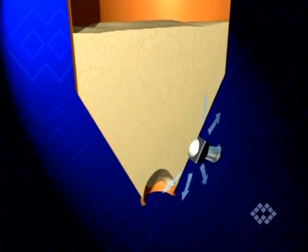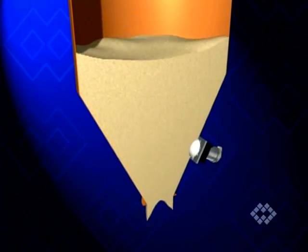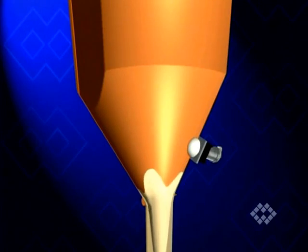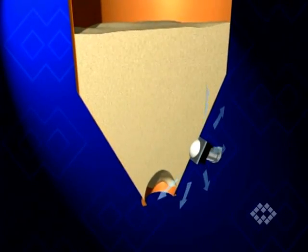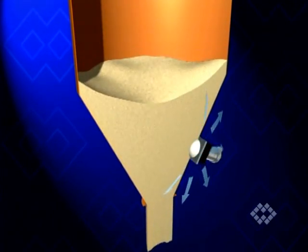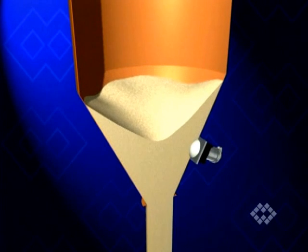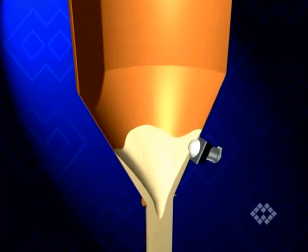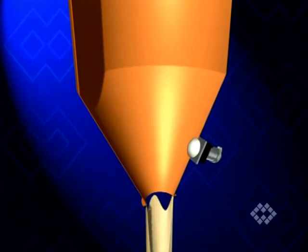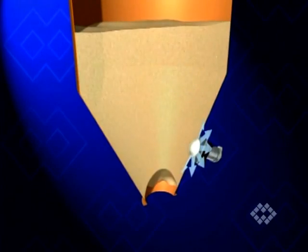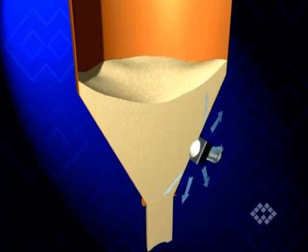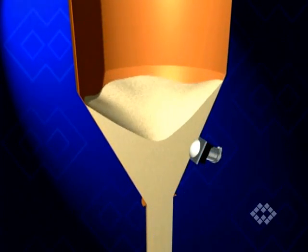The PJ type hammer blast adds to the mechanical action of the PS type hammer a compressed air jet expanding across the surrounding wall surface. It also adds more extended impact vibration. The PJ type hammer blast is most suitable for materials with a tendency to bridge and hygroscopic properties.